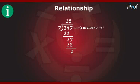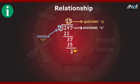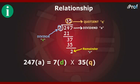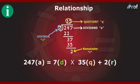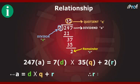Let the dividend be A, let the divisor be D, let the quotient be Q, and let the remainder be R. Thus, we can write 247 = 7 × 35 + 2. If we rewrite the above by replacing the numbers by the corresponding terms, we get A = D × Q + R. Hence, R = A − D × Q.